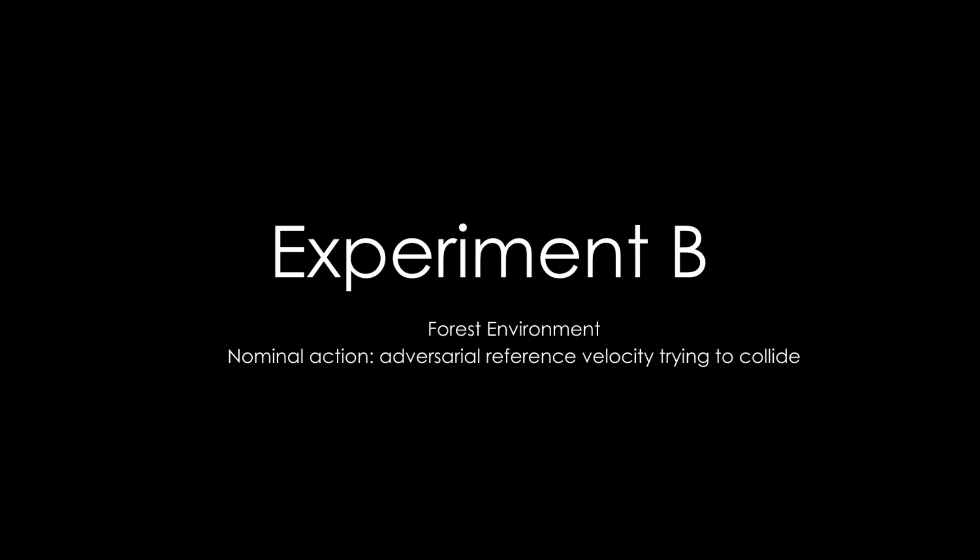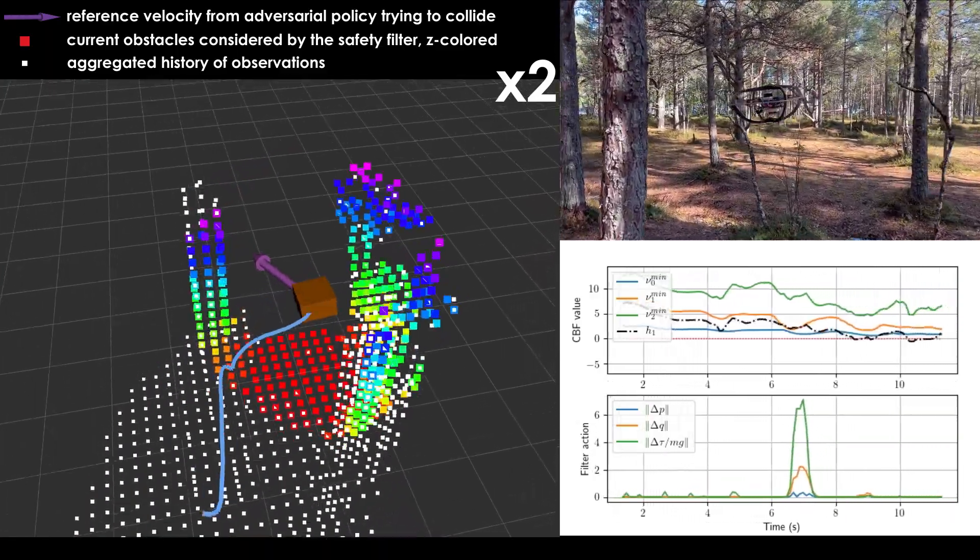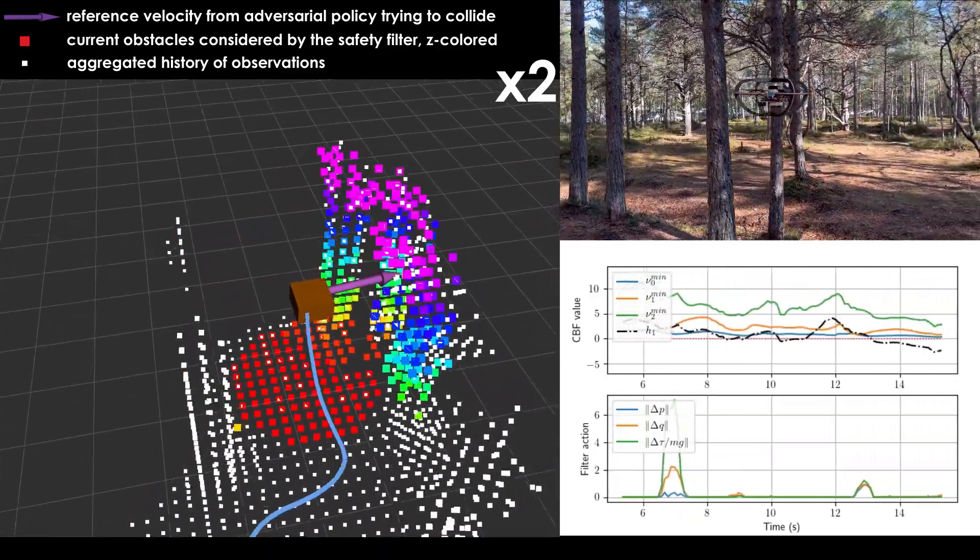In the second experiment, we evaluate the safety filter against an adversarial reference input in a forest environment. The nominal policy is a reference velocity provided by a human operator which tries to collide the robot with tree trunks, branches, and bushes.